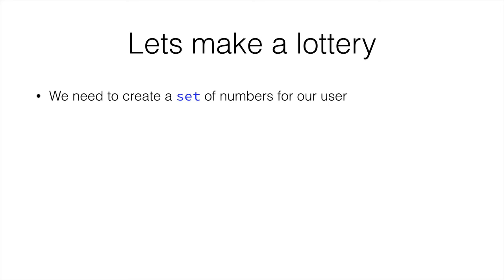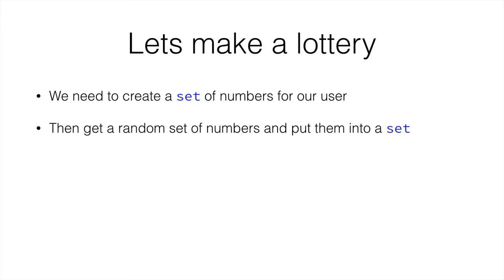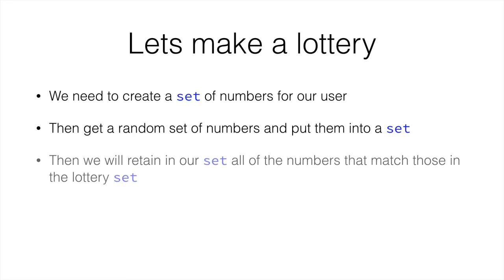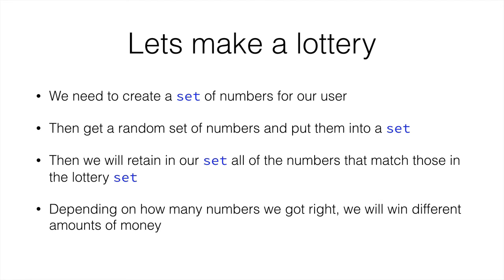Let's try to make a lottery, and I'm sure this will explain the set fully in a lot more detail. We need to create a set of numbers for a user — for example, if you pick five numbers, then we create a set and put those five numbers in it. And then create a random set of numbers and put them into a different set. So we would have the five numbers of our user and random five numbers in a different set. Then we'll get our set and retain all the elements that are present in both our set and the lottery set. This way our set would only end up with those numbers that match the lottery, and depending on how many numbers match we'll win different amounts of money.